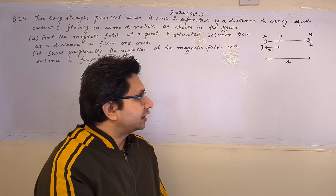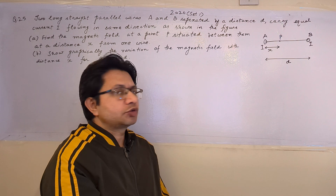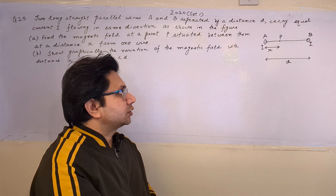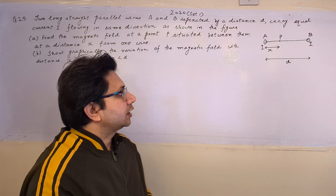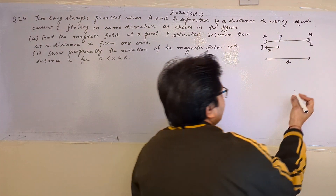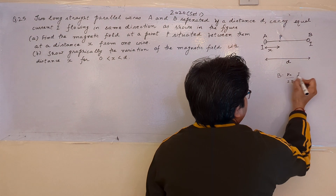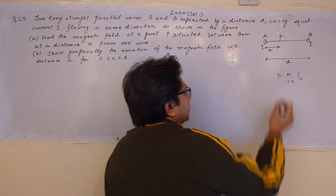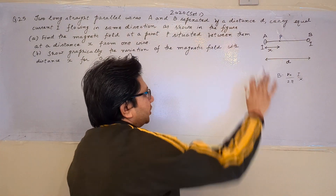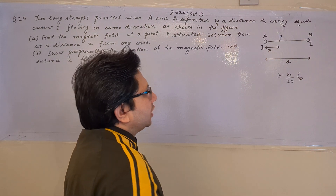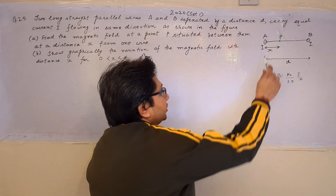This problem is based on the magnetic field at a certain point located at a distance from a current-carrying wire. Due to the current-carrying wire there is a magnetic field, and the magnetic field is given by the formula B = μ₀/2π × i/x, if the point is situated at a distance x. We have to use this particular formula to calculate the net field.